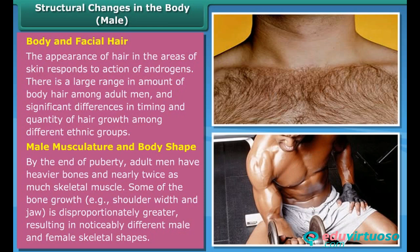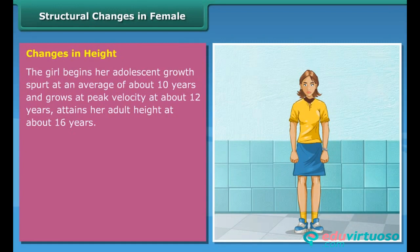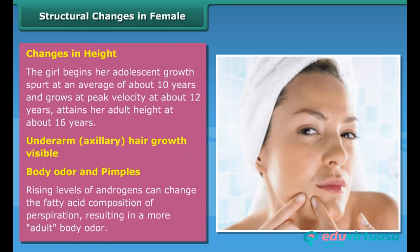Structural changes in females — changes in height: the girl begins her adolescent growth spurt at an average of about 10 years and grows at peak velocity at about 12 years, attaining her adult height at about 16 years. Underarm and auxiliary hair growth also become visible during this period.